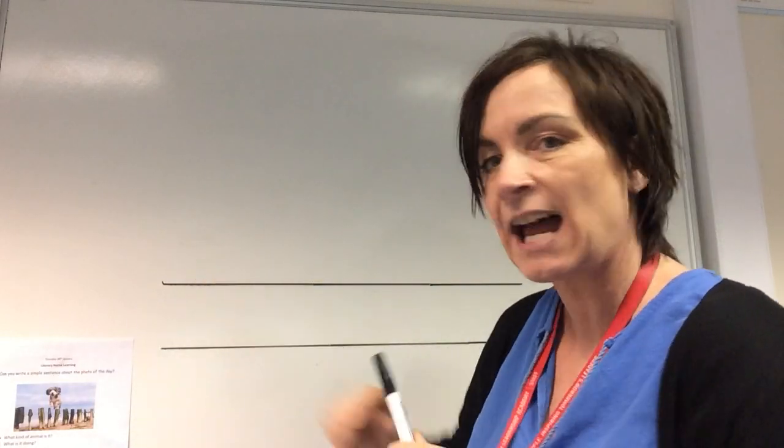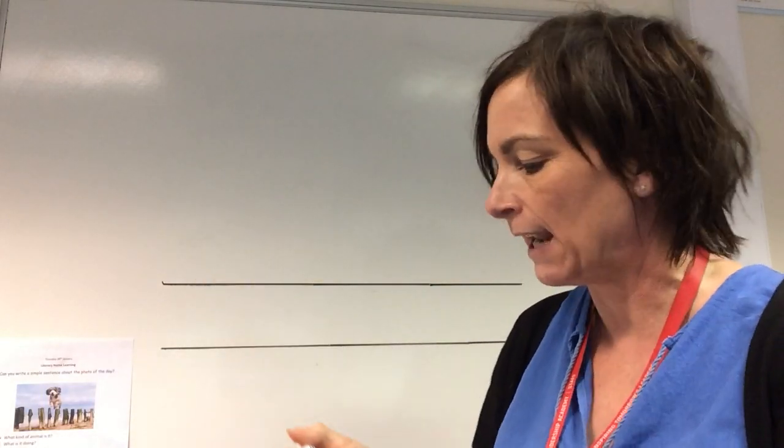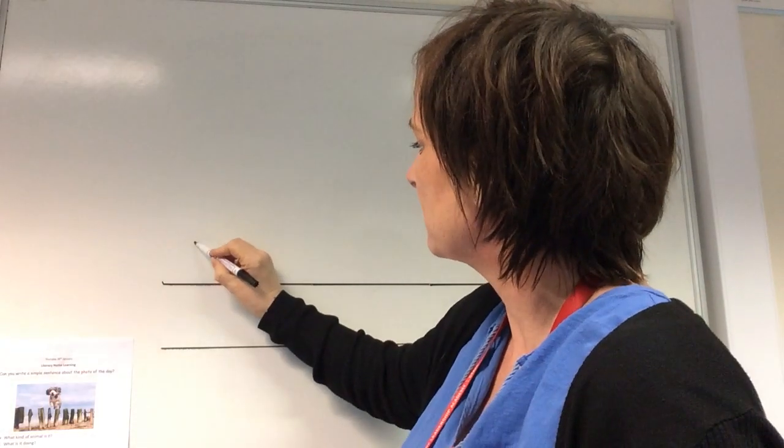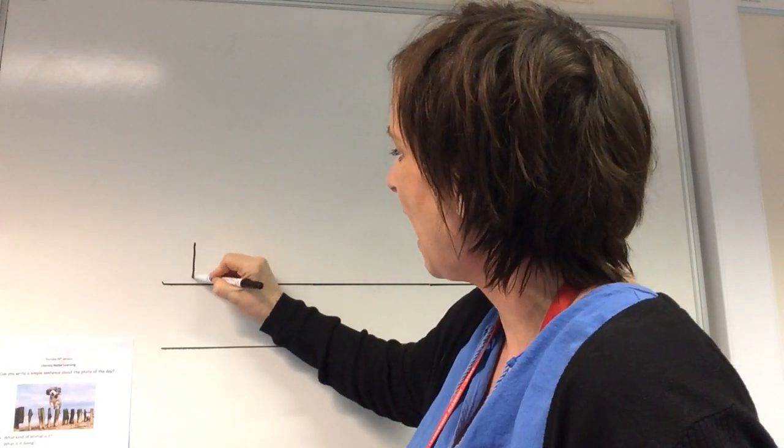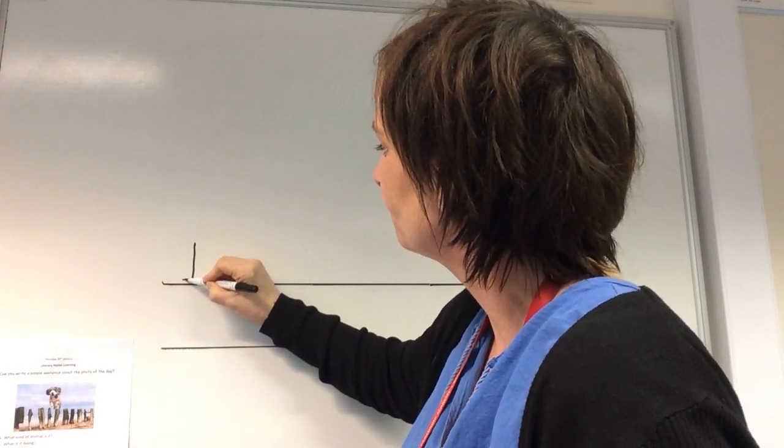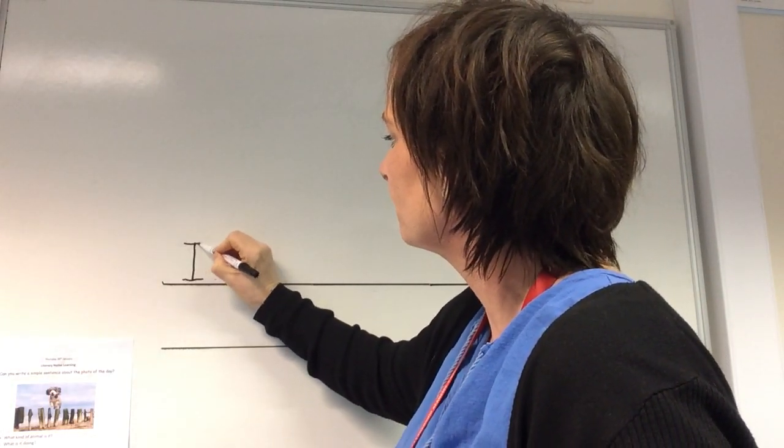So my first word is — that's right — I. Now, I is one of our tricky words, isn't it? So start at the beginning on the left-hand side and I'm going to write I. And it's a capital letter because it's the beginning of the sentence.